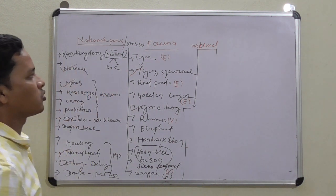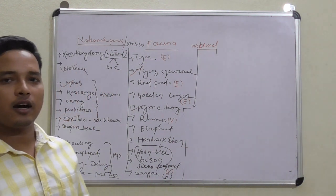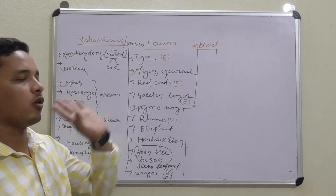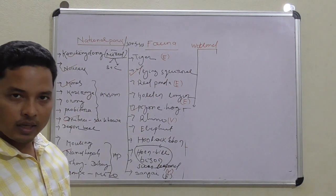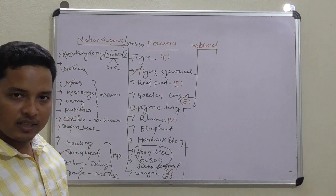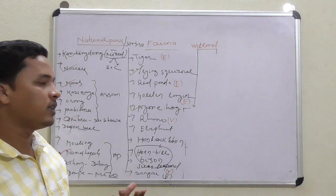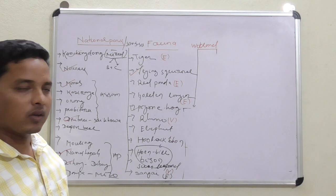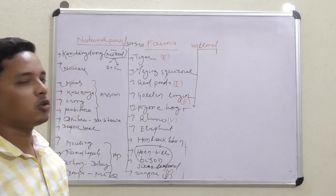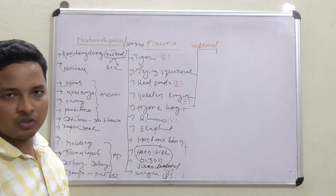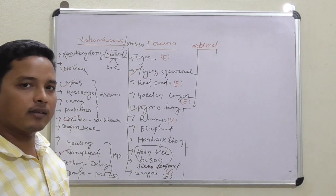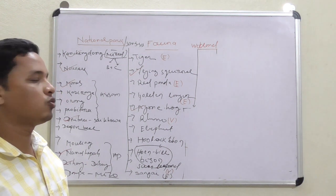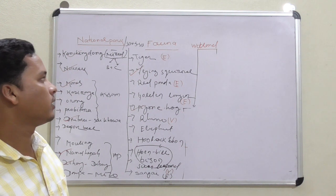Now comes to the fauna of Northeast. Tigers are also found in national parks like Orang, Manas, Kaziranga, Nokrek, and other regions. There are two types of tigers found in Northeast region: one is Royal Bengal tiger and the other is leopards or snow leopards.